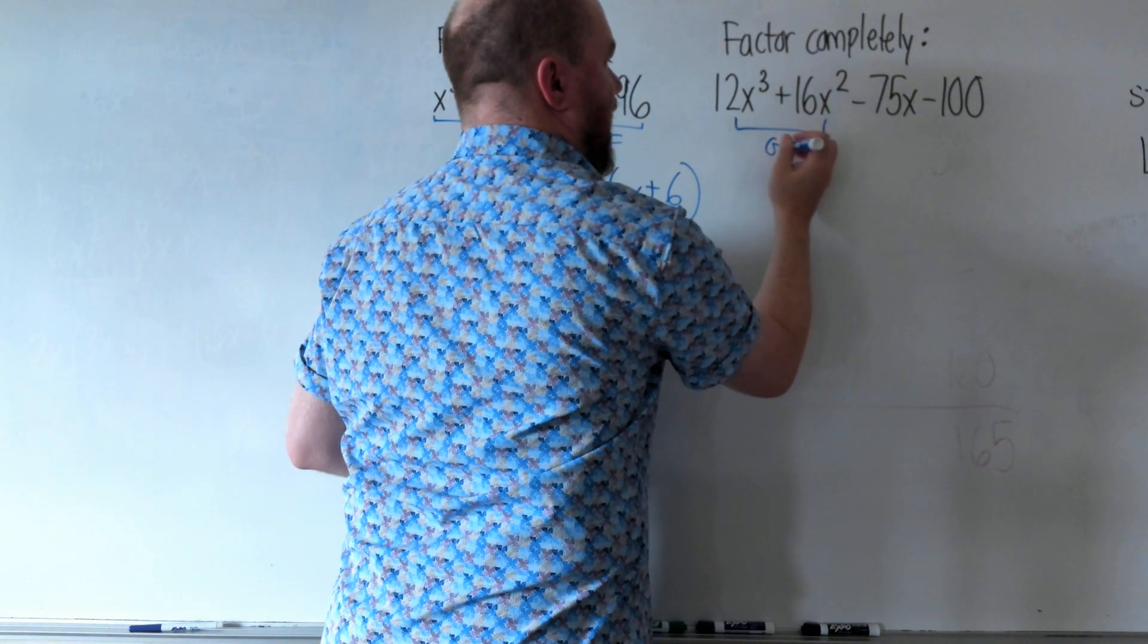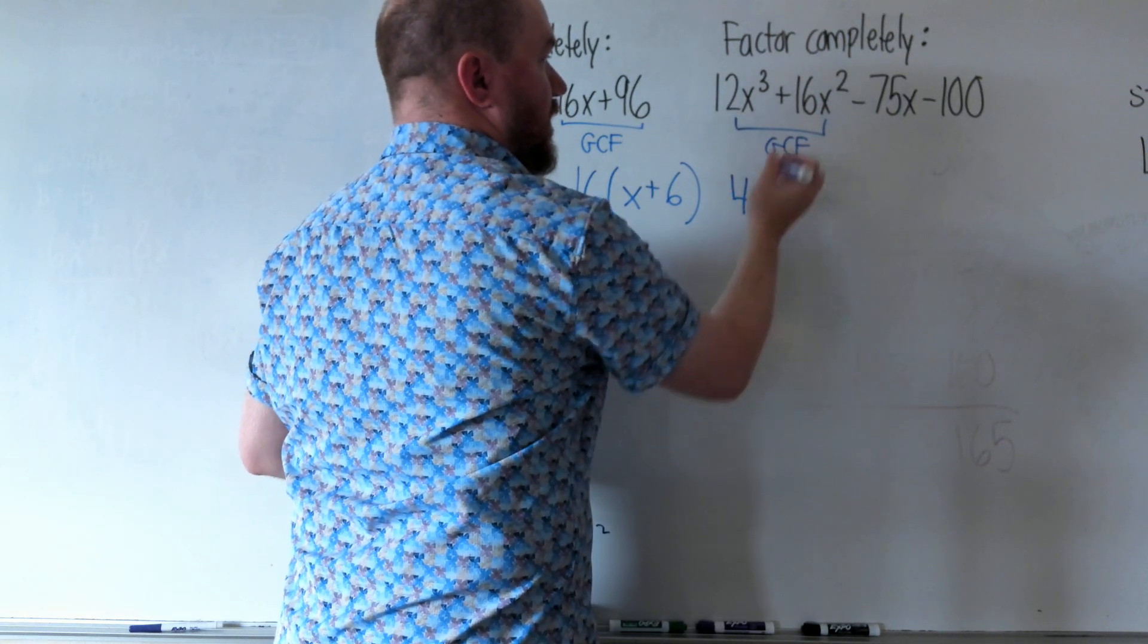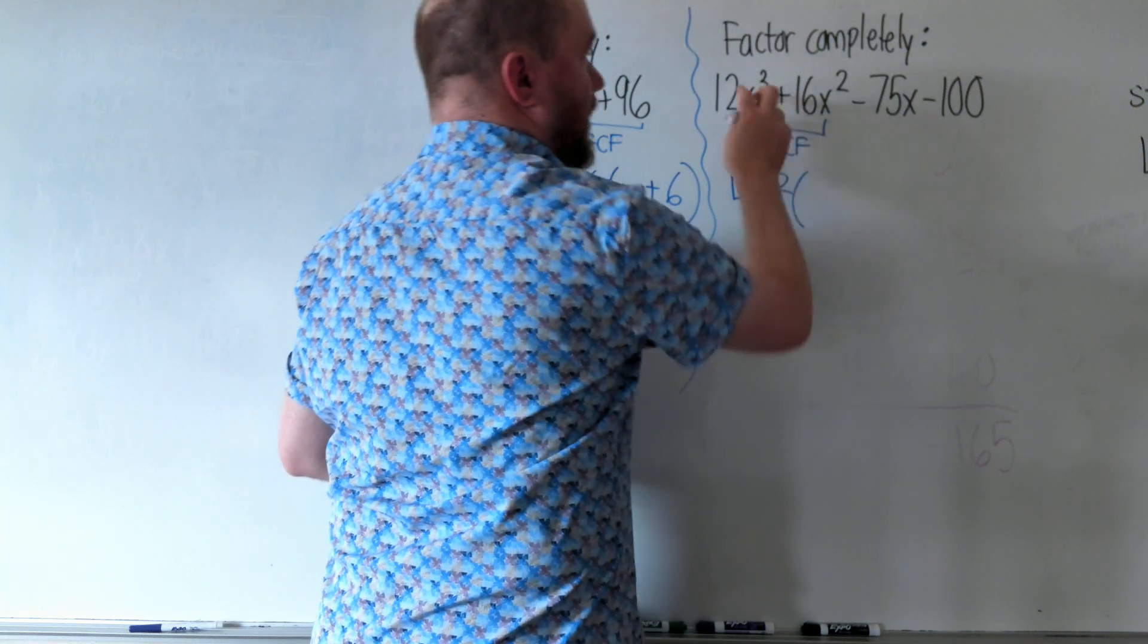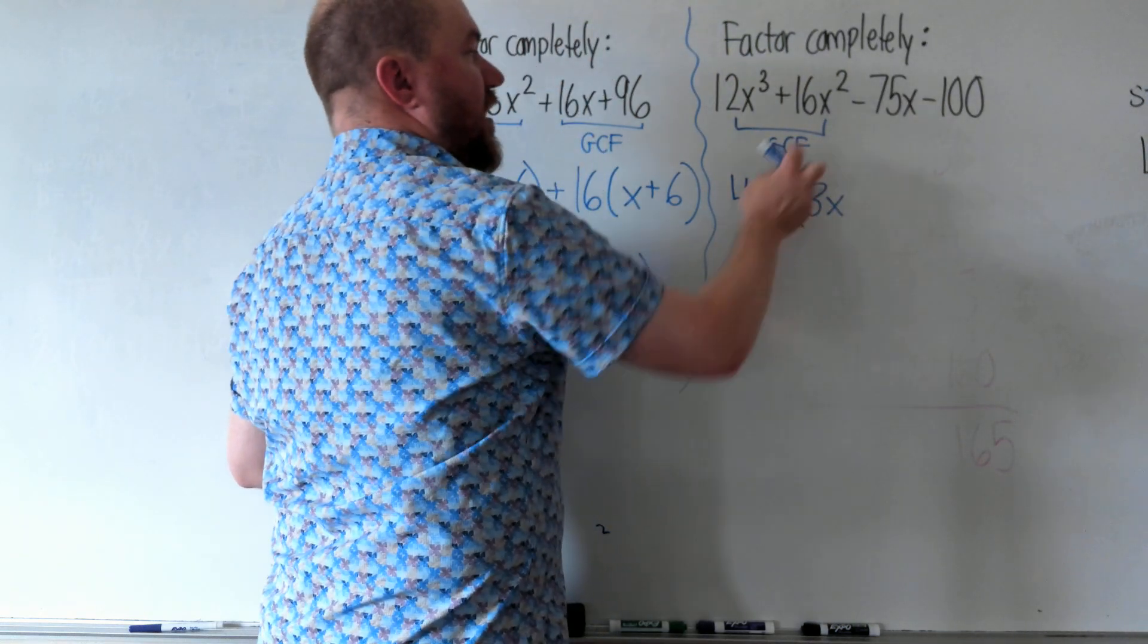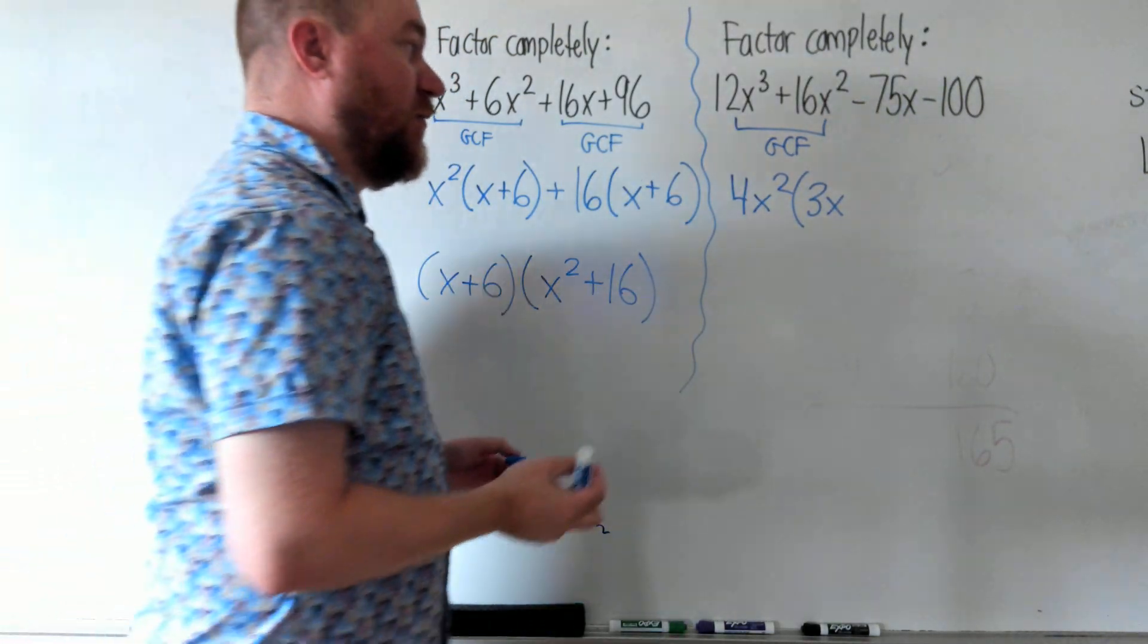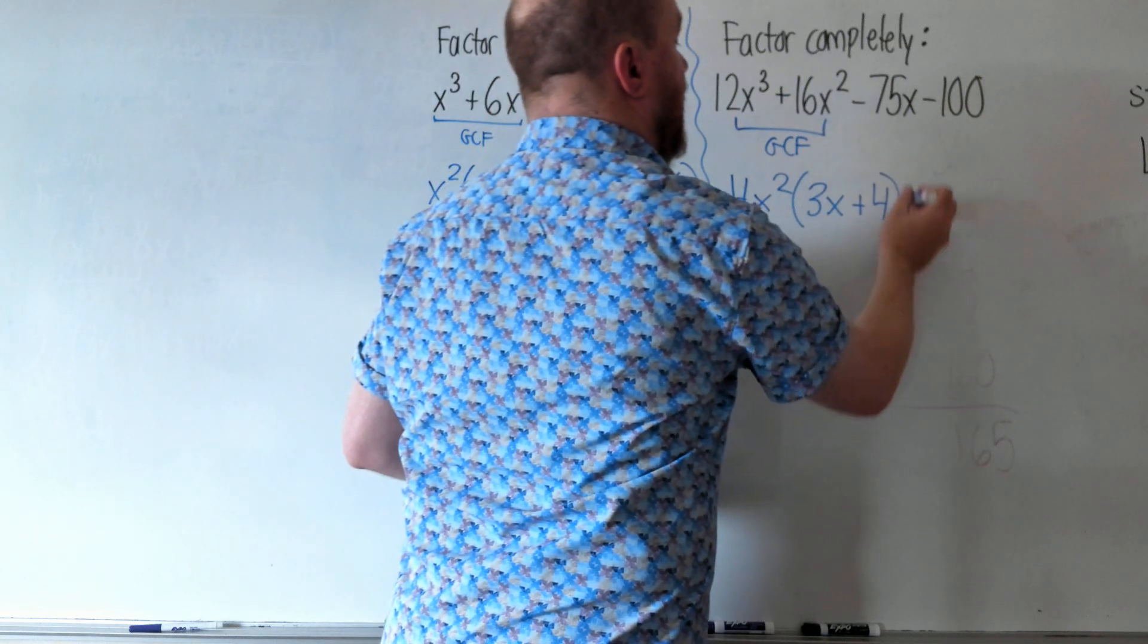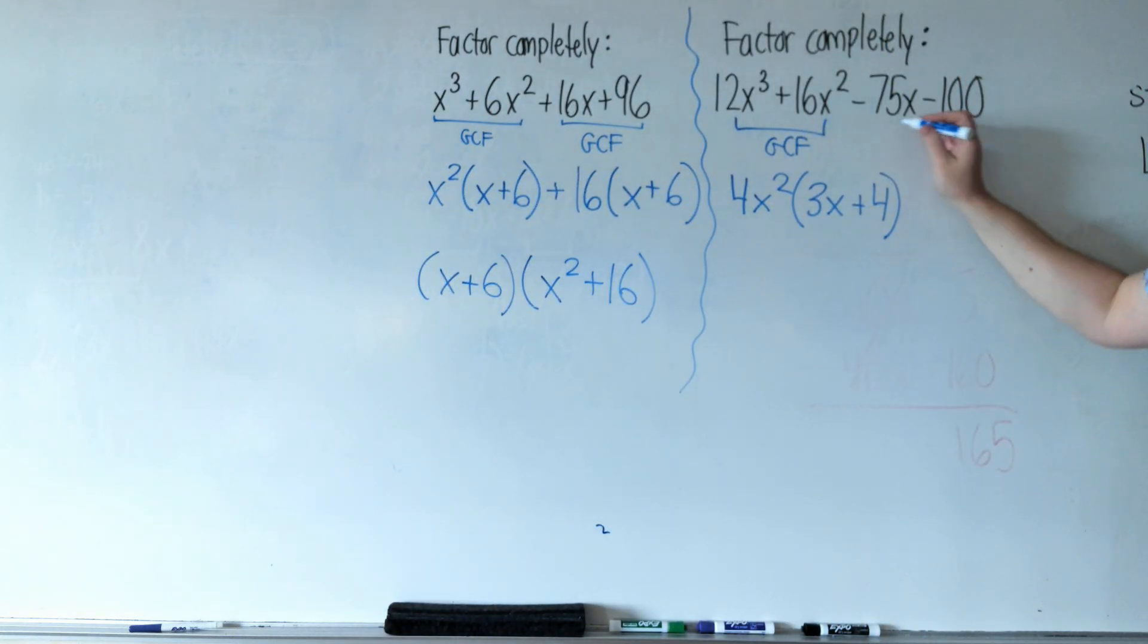What's the GCF of these first two terms? That would be 4x². And what's left over? When we divide both of them by 4x², we get 3x. And what's that divided by 4x²? 16 divided by 4 is 4, and the x² divided by x² we don't need to write.